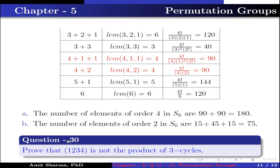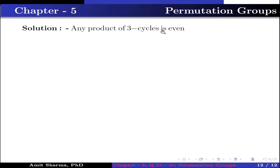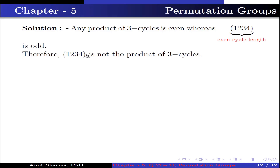Question number 30. Prove that the permutation (1 2 3 4) is not the product of 3-cycles. Any product of 3-cycles is even, whereas the permutation (1 2 3 4) is a 4-cycle — an odd permutation. Therefore, (1 2 3 4) is not the product of 3-cycles.